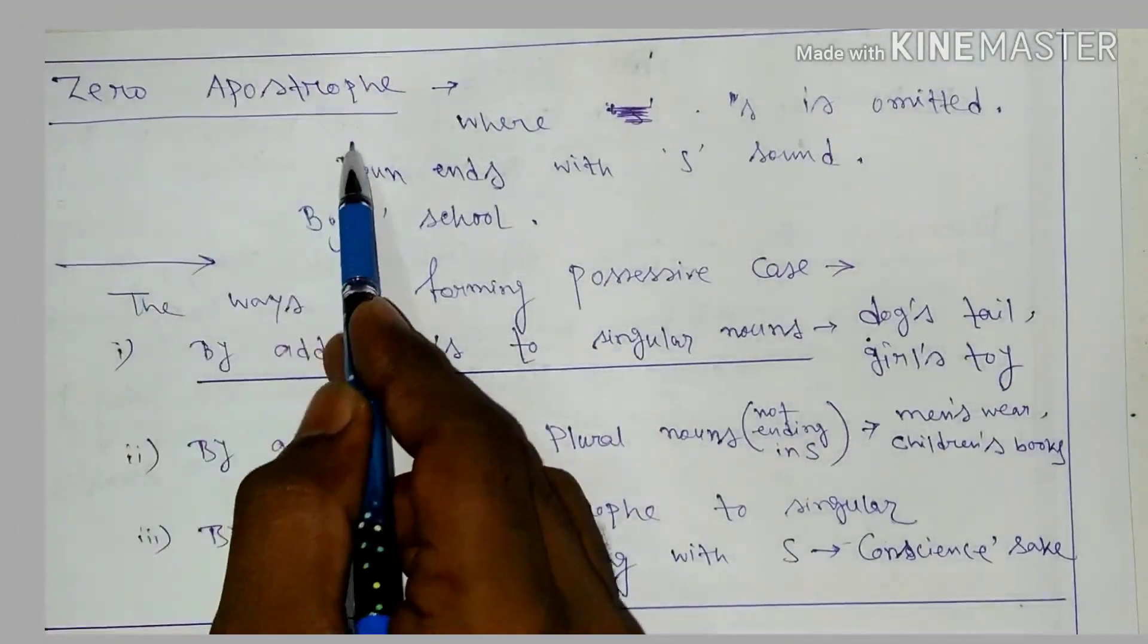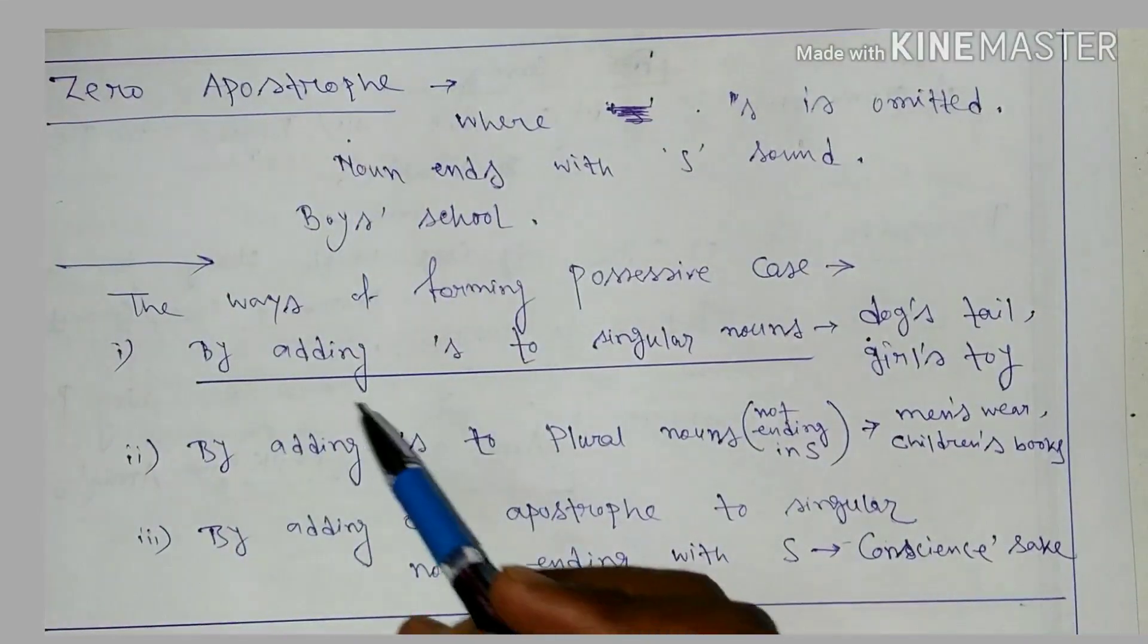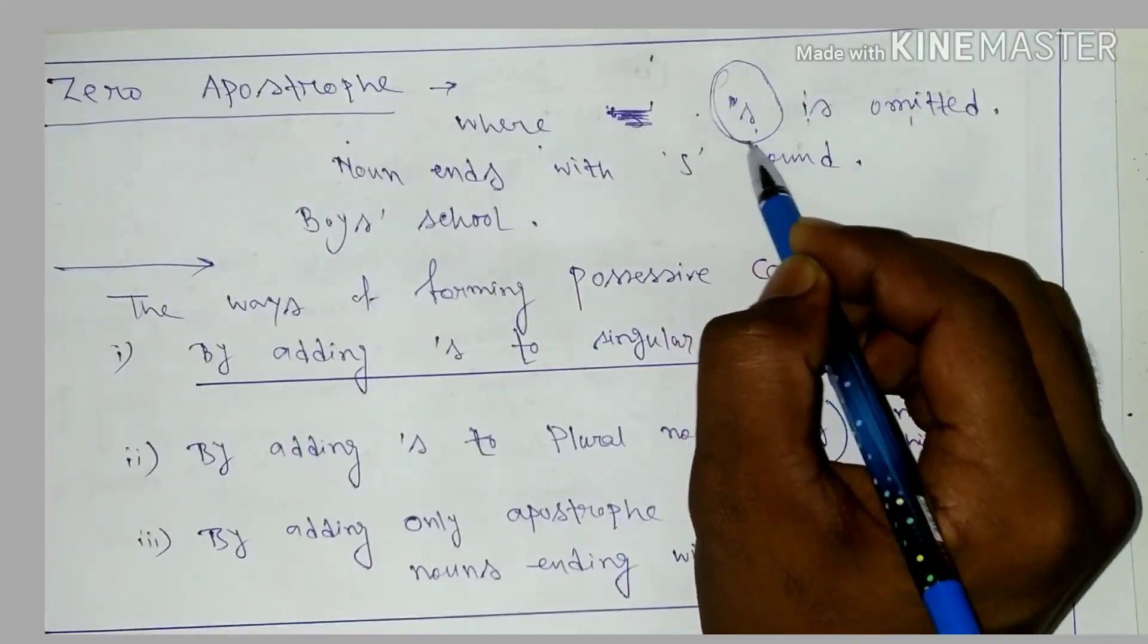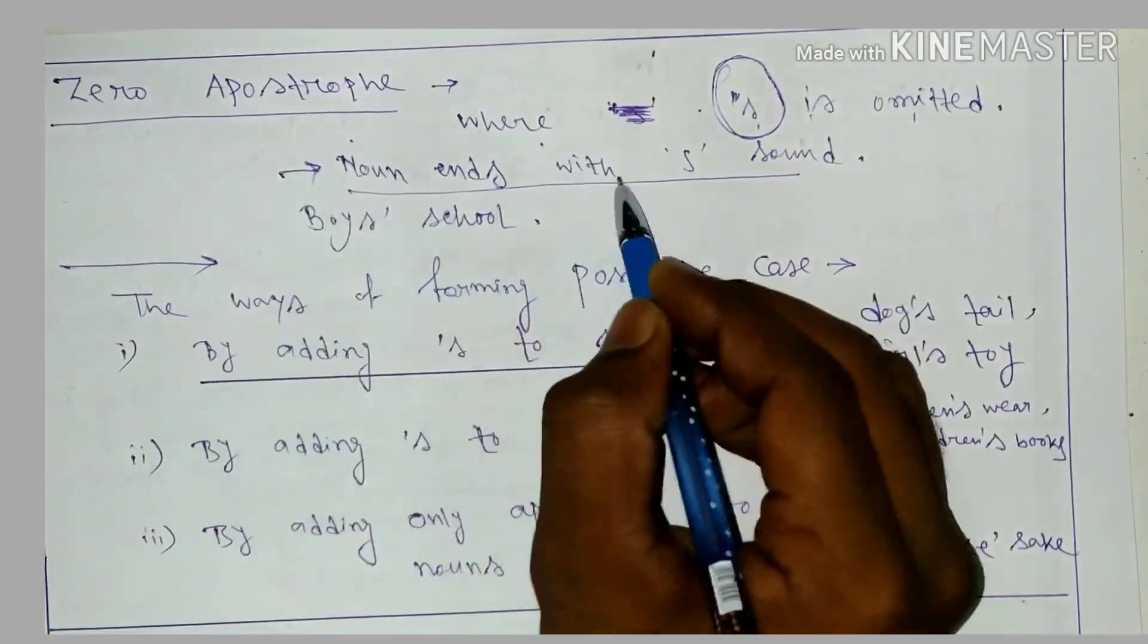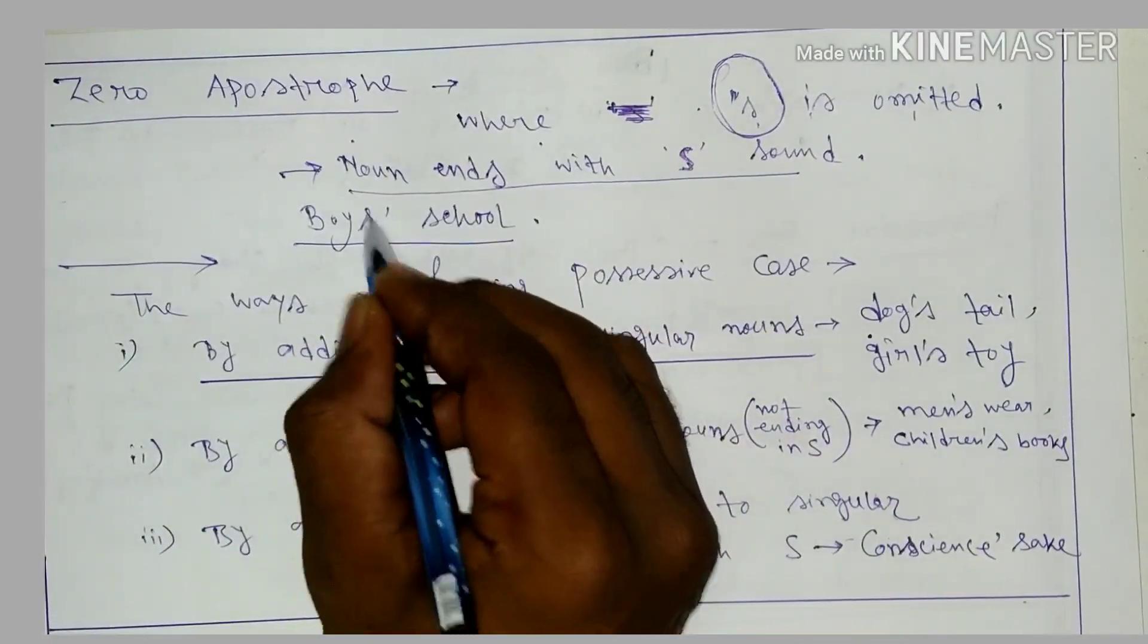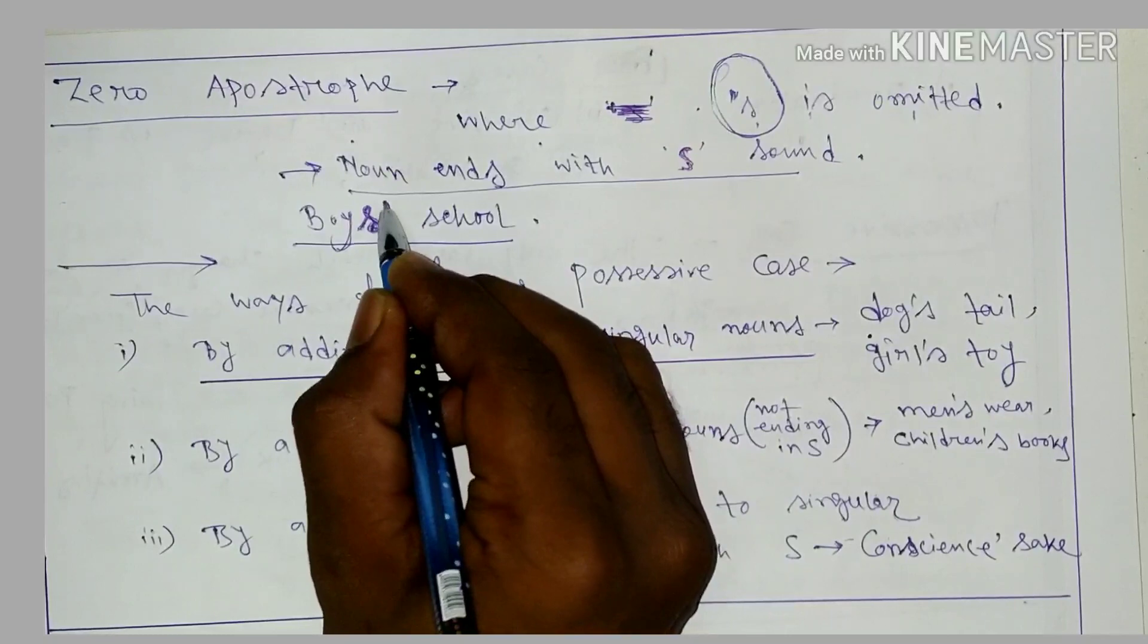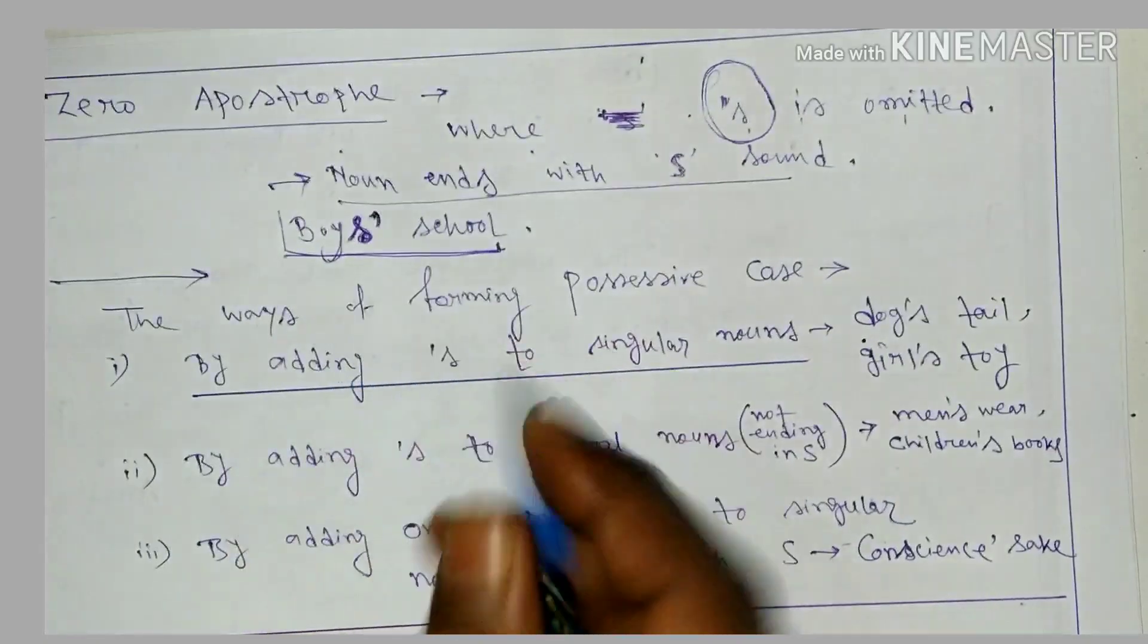There is zero apostrophe. Zero apostrophe is where apostrophe s is omitted. When a noun ends with s sound, we don't use apostrophe s, like boys' school. Boys is ending with s sound, so we don't use apostrophe s, just apostrophe. This is zero apostrophe.